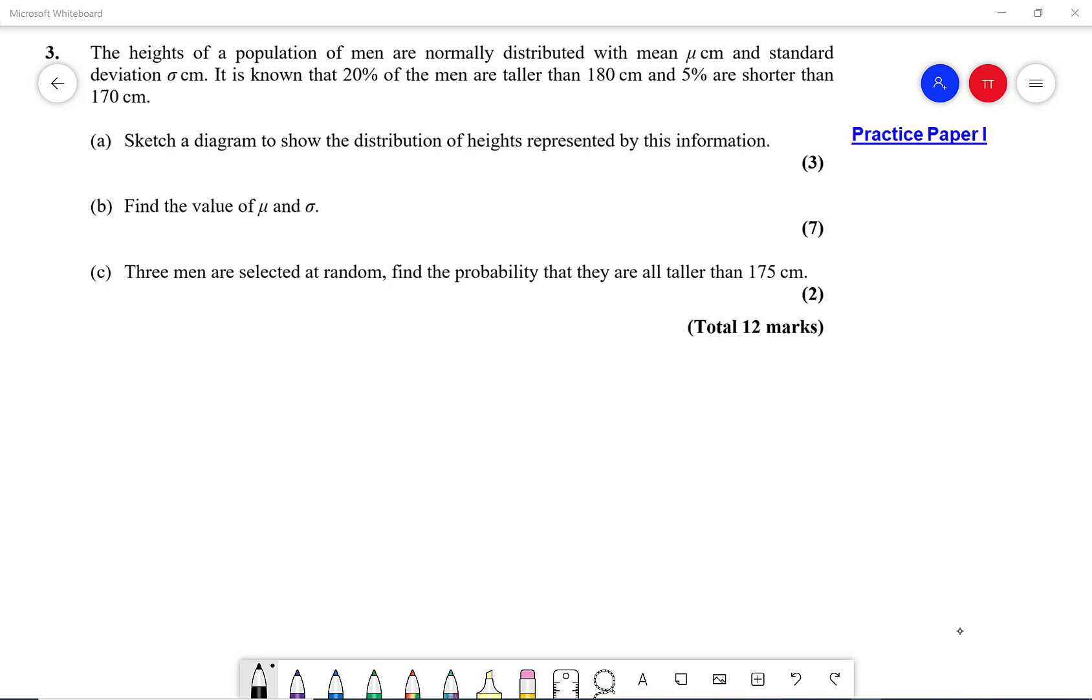In this video we're going to look at calculating mu and sigma. So in this question, the heights of a population of men are normally distributed with mean mu and standard deviation sigma.